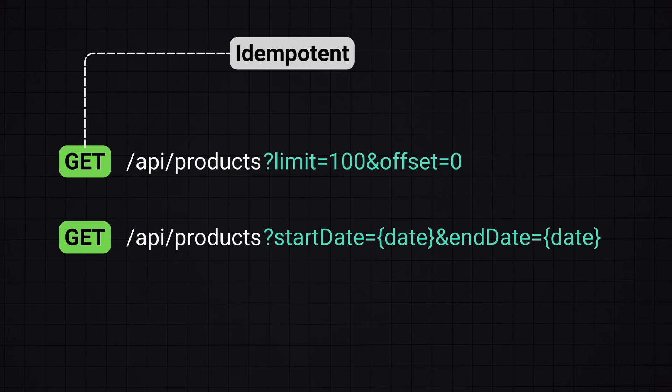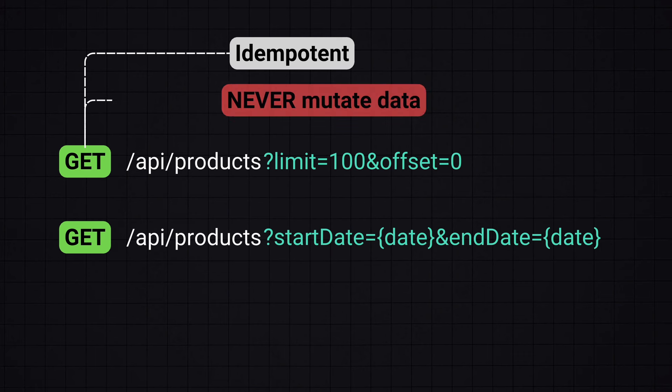A well-designed GET request should be idempotent, meaning calling it multiple times doesn't change the result and it should always return the same result. GET requests should never mutate data — they are meant only for retrieval. If you need to update or create data, you need to use a PUT or POST request.